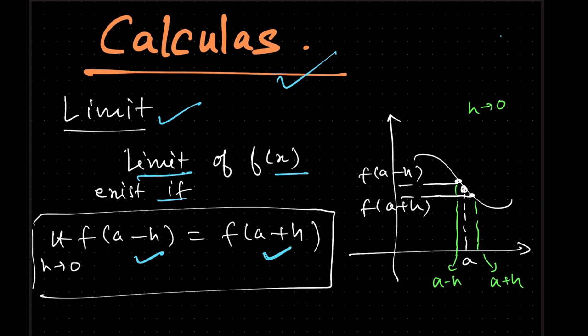We will see from this graph — it will be more clear. At x equal to a, we have the value f(a). Just left of f(a) we have f(a) minus h, and just right we have f(a) plus h, where h is very small. These points will merge, so the limit exists when the just left-hand side and the just right-hand side of a value a of a function is the same.